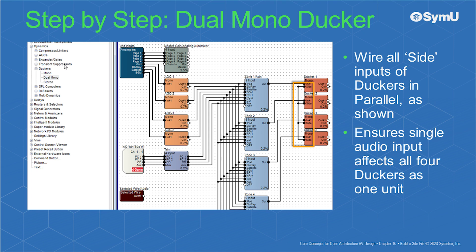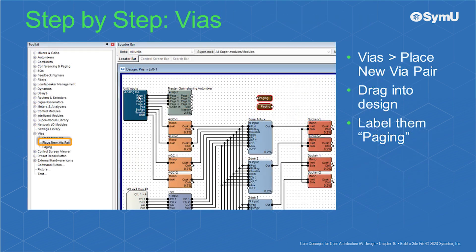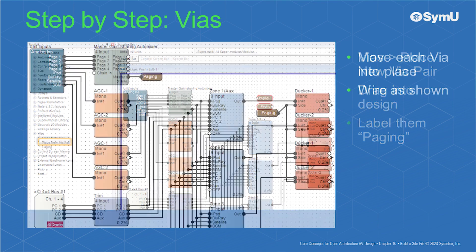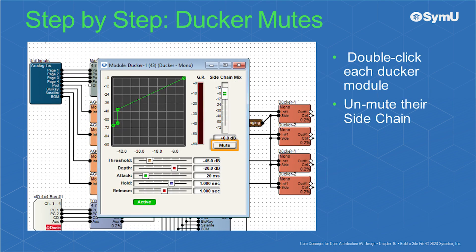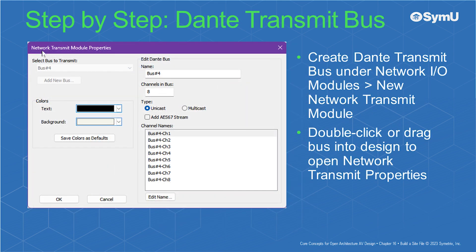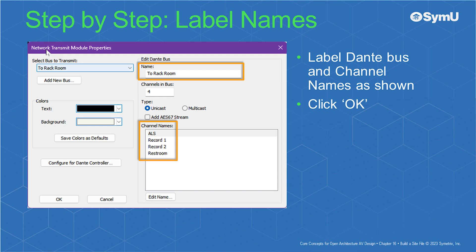This ensures that a single audio input affects all four duckers as one unit. Under vias, place new via pair, drag a pair into the design, double-click and label them 'paging.' Move each via into place and wire them as shown. Double-click each ducker module and unmute their side chain. Next, create a Dante transmit bus under Network I/O modules, new network transmit module. Either double-click or drag the bus into the design to open the network transmit properties window. Label the Dante bus and channel names as shown and then click OK.